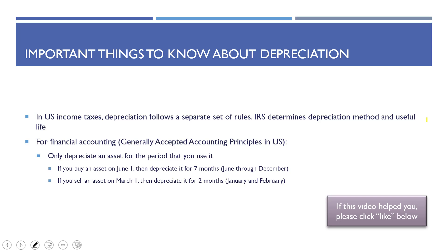When doing taxes in the United States, depreciation follows a very specific set of IRS rules, not the rules covered in these videos. The IRS will determine your depreciation method and useful life — for example, if you have a truck, the IRS tells you what method and useful life to use. For financial accounting under U.S. GAAP, you only depreciate the asset for the period you actually use it. If you buy an asset on June 1st, you depreciate it for seven months (June through December). If you sell it on March 1st, you depreciate it for only two months and then stop.